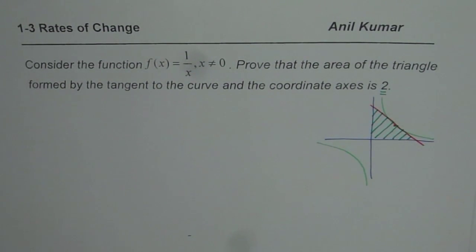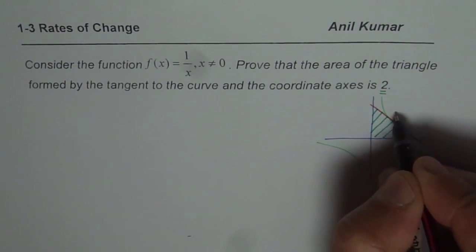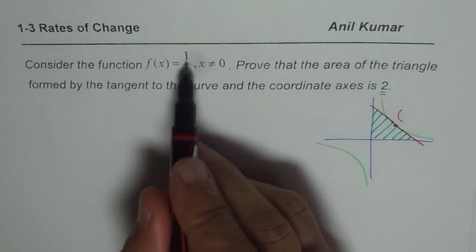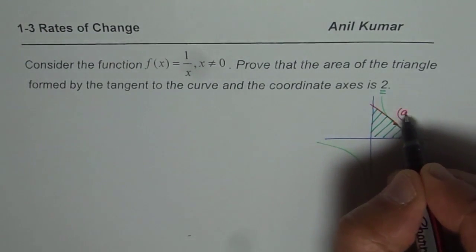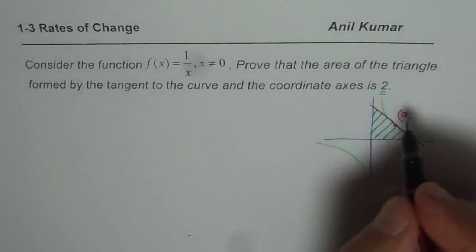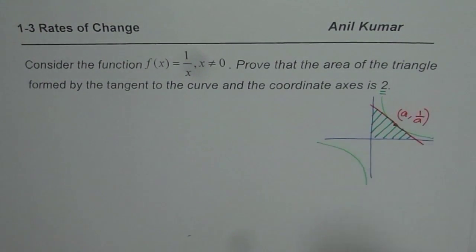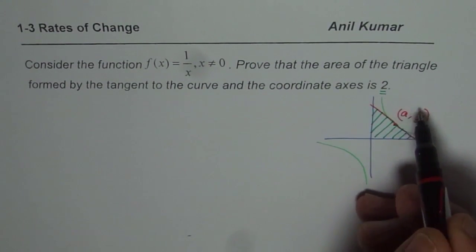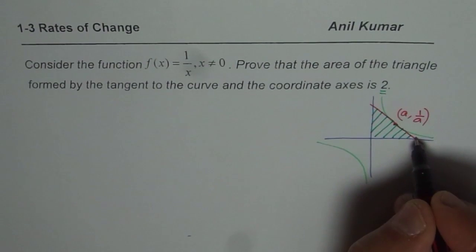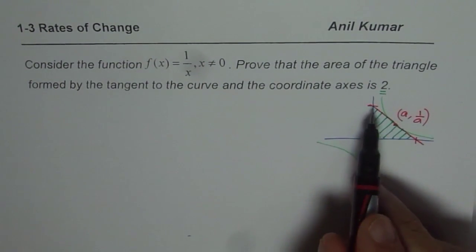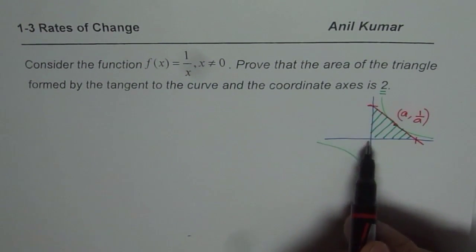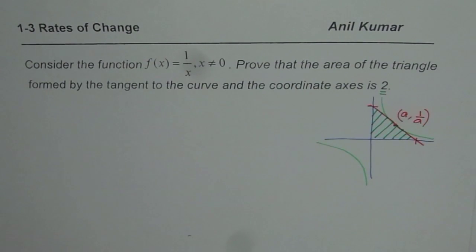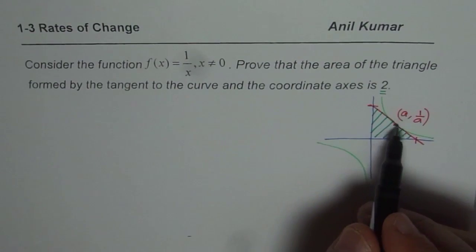The strategy here is to take any general point on the function f(x) = 1/x. If I take x as 'a', the y-value will be 1/a, so (a, 1/a) becomes a general point. We will find the equation of the tangent at that general point, then find the x and y intercepts. Once we find the intercepts, we can find the area as half the product of x and y intercepts.